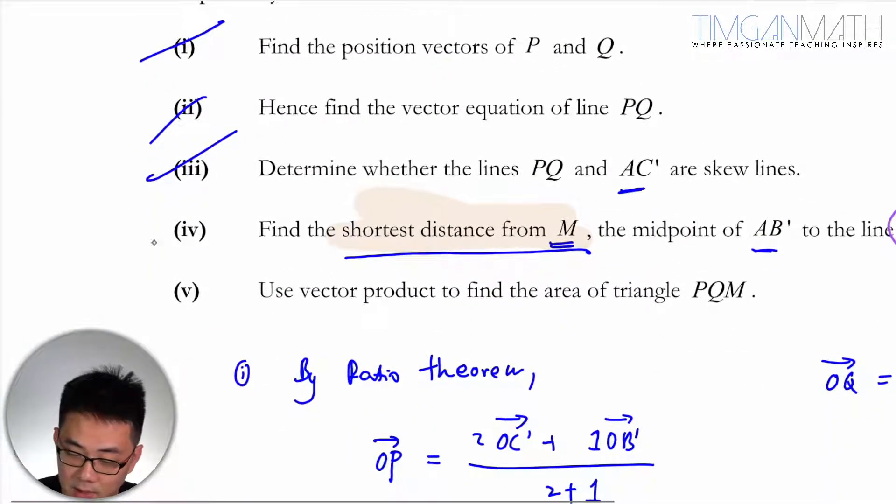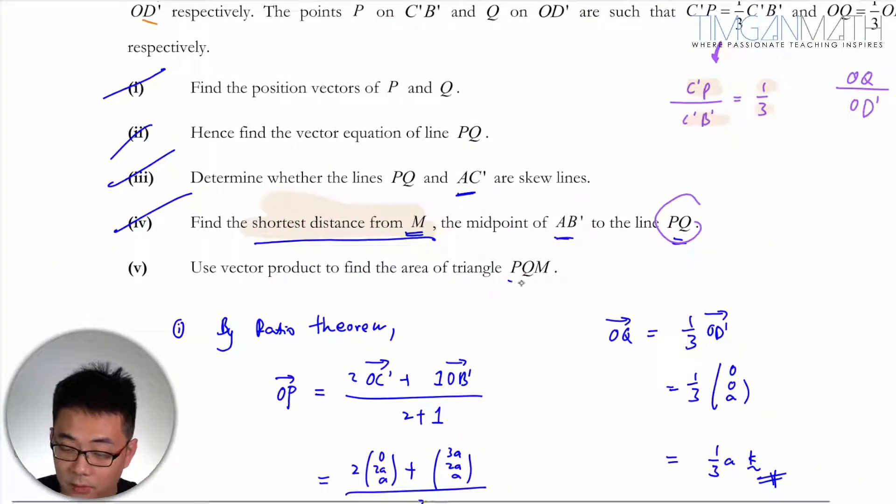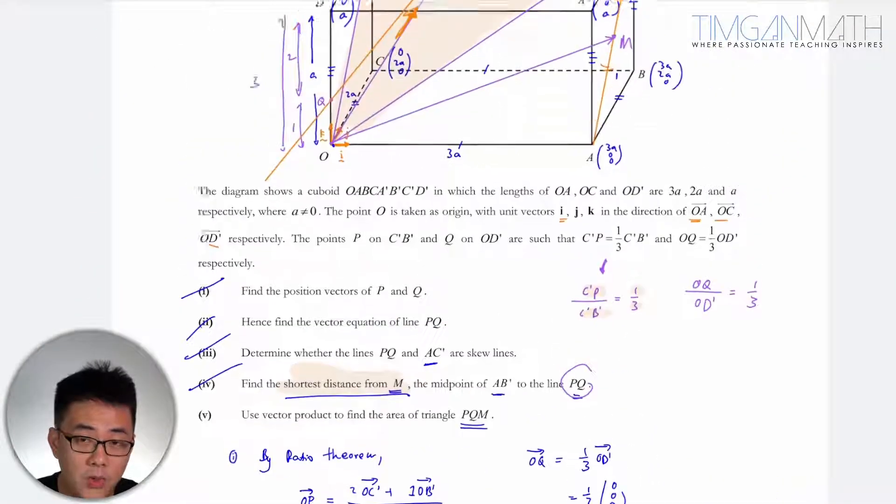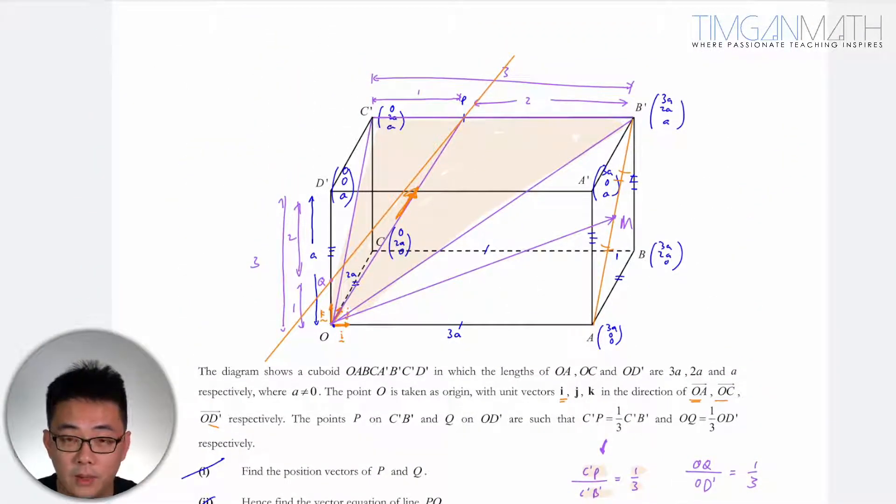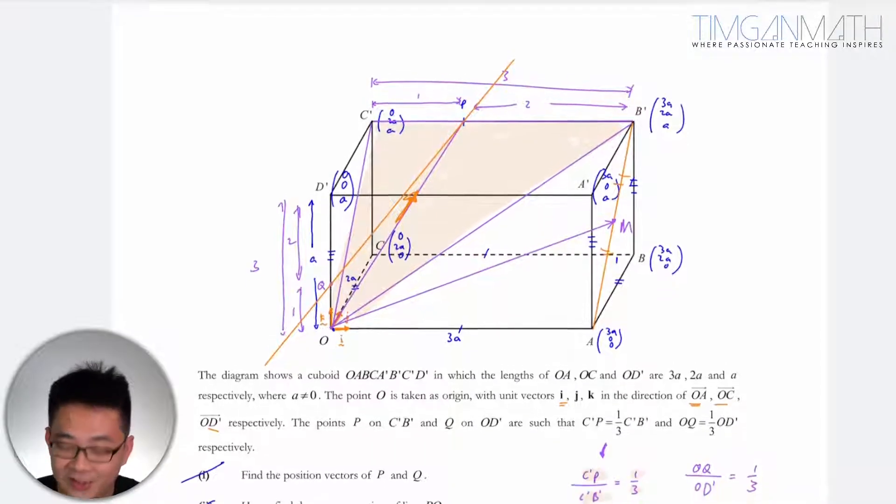So let's look at the last part here. Use vector product to find the area of PQM. PQM would then be... Where's PQM? Where's PQM?